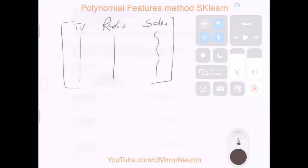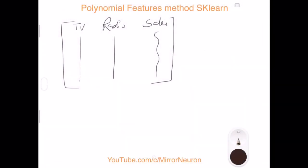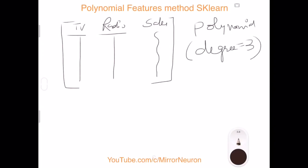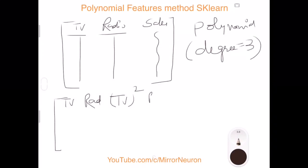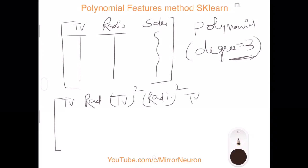Now let's explain how the PolynomialFeatures method from sklearn works. Say you have a matrix of features — your input variables are TV and Radio. If I am trying to create features of degree 3, the PolynomialFeatures method will start with the two original features: TV and Radio. Then it will create TV², Radio² (degree 2), then TV³ and Radio³ (degree 3).